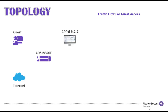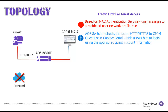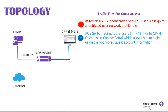Traffic Flow for Guest Access. When a guest user is connected to Alcatel-Lucent Switch, based on MAC Authentication Service, the user is assigned to a restricted user network profile role. When a guest user opens up a browser and tries to go to the Internet, the AOS Switch redirects the HTTP or HTTPS traffic to CPPM Captive Portal Authentication Service, which allows the user to log in using the sponsored guest account information.